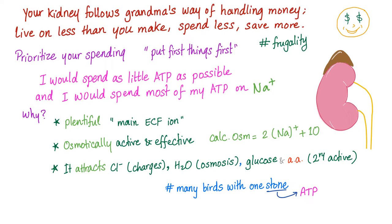Your kidney follows grandma's way of handling money. What did grandma tell you? Live on less than you make, spend less, save more. This is called frugality. So, you should prioritize your spending and put first things first. So, the kidney listened to grandma. I would spend as little ATP as possible. And if I'm gonna spend ATP anyway, let me spend it on sodium. But why sodium? Sodium is very plentiful. Sodium is osmotically active and it's effective. It's an effective osmol. Also, sodium attracts chloride and water and glucose and amino acids. So, many birds with one stone. Go get them, kidney. And the one stone here is ATP. Only once.